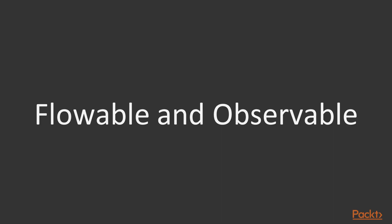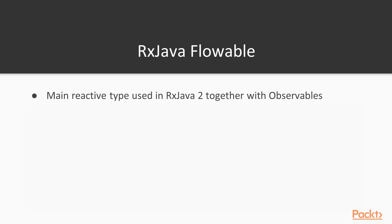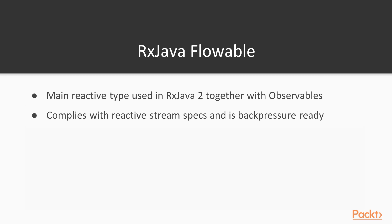RxJava flowable is the main reactive type used in RxJava together with observables. The main difference is that flowable is back-pressure aware and is compliant with the reactive stream specs, while observable is not back-pressure aware at all. The main characteristic of flowable and observable is that they are used to declare streams from zero to N items — that's why these are the most widely used stream types in RxJava.